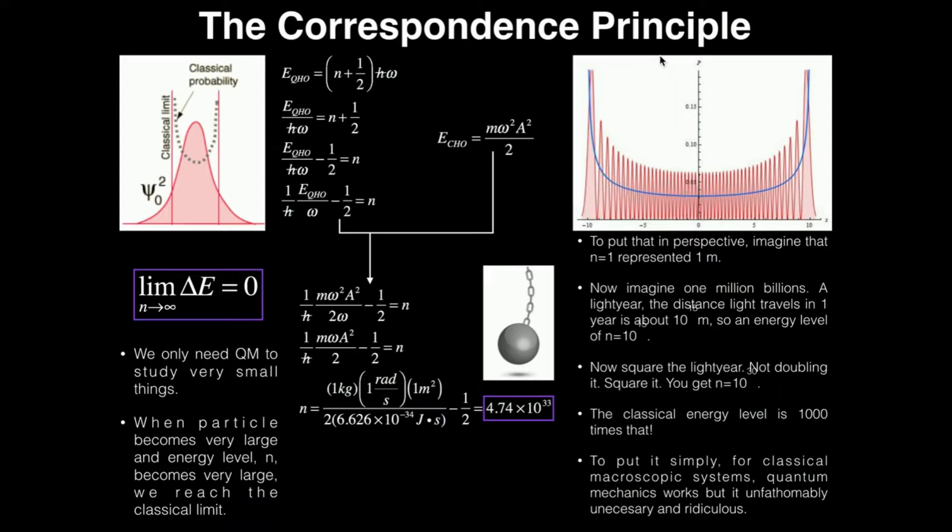One way to think about the correspondence principle is to ask: what happens if I take a classic species like this wrecking ball that clearly doesn't need quantum mechanics, but I give it quantum treatment? I take this expression for the energy of the classic harmonic oscillator and plug it in for the quantum energy. So I have one over h-bar times m omega squared a squared over two omega, then subtract that one-half, which you'll see in a minute doesn't do anything, equals n.